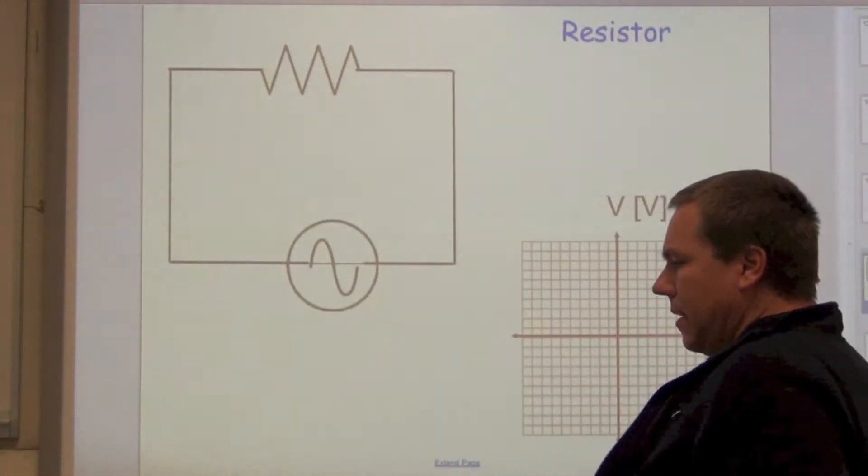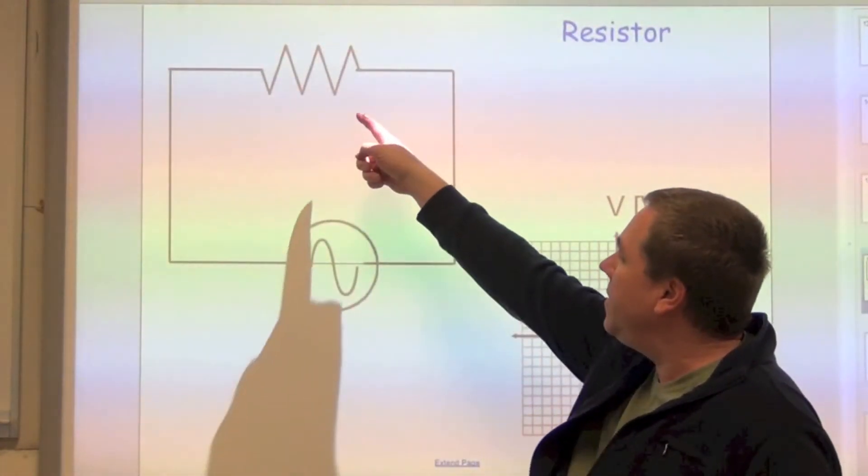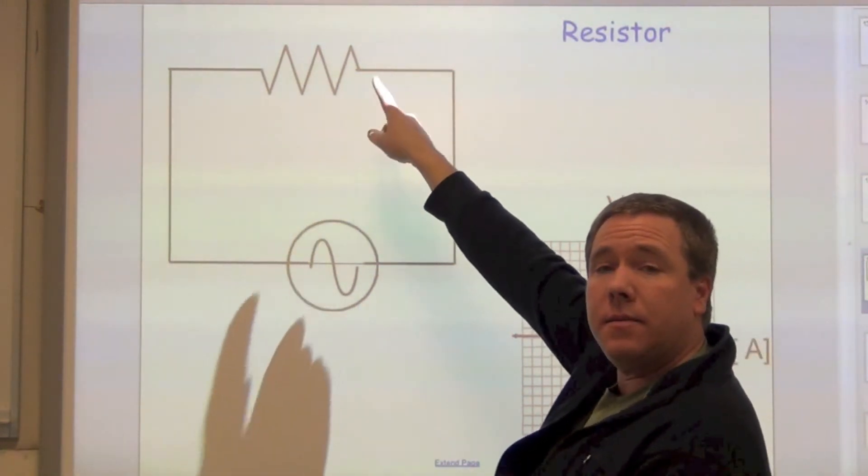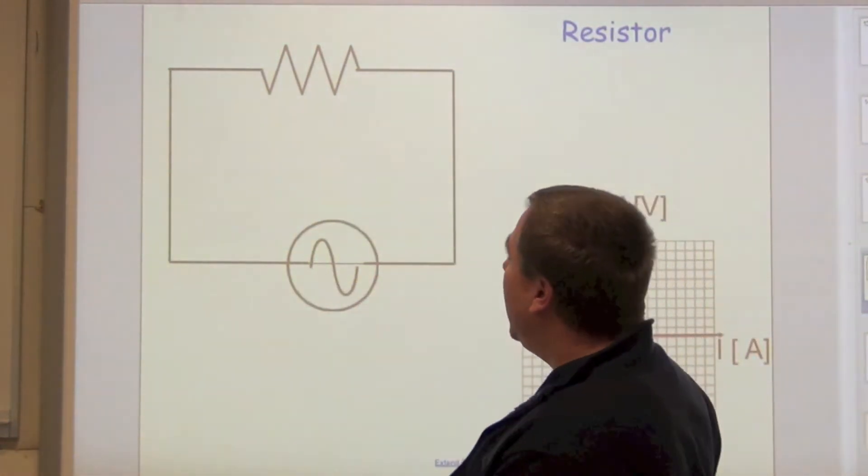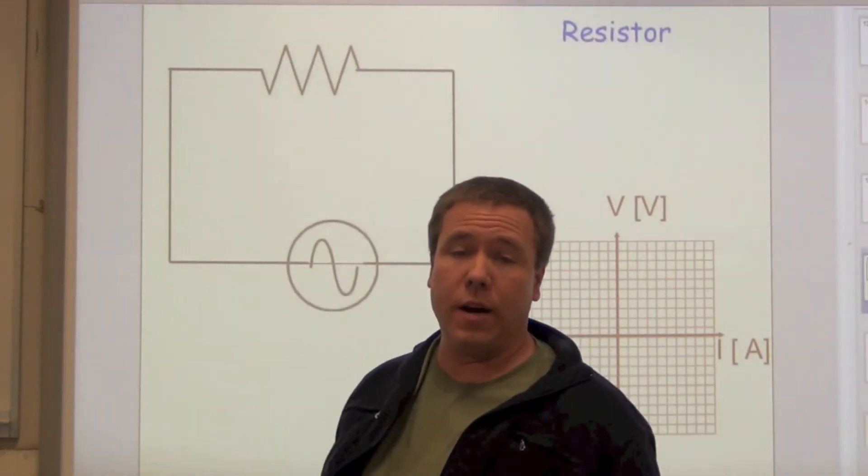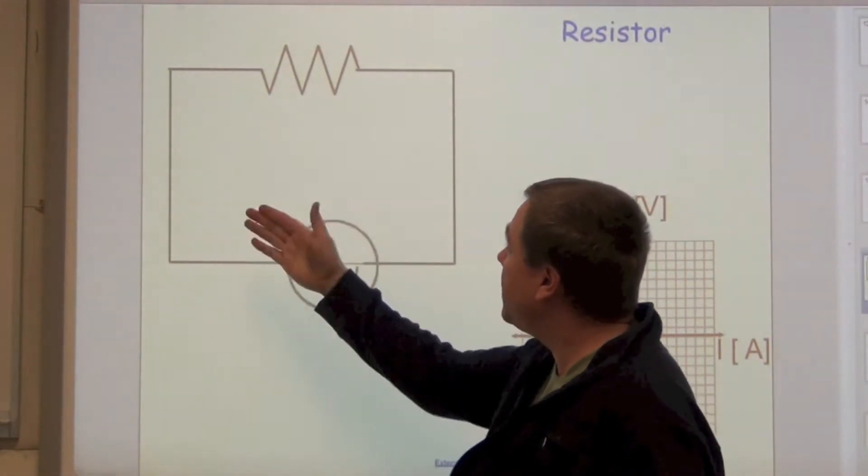Now think about the resistor. First of all, we draw the resistor either like that or with a simple rectangular box. This is the symbol for the AC waveform right here that we're sending through there.